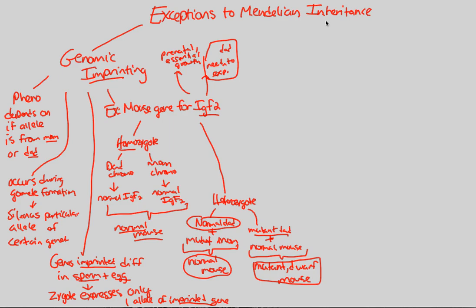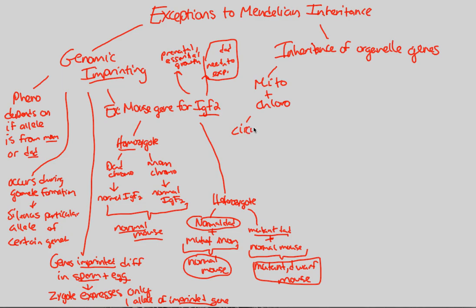We can conclude this idea of exceptions to Mendelian inheritance by looking at the inheritance of organelle genes — genes not within our regular genome but found within mitochondria and chloroplasts. Chloroplasts are found in plants, not humans. Within mitochondria and chloroplasts, we have circular DNA due to their bacterial ancestry. Because they are circular, independent pieces of DNA, they reproduce independently of the cell and transmit their own genes to daughter organelles.